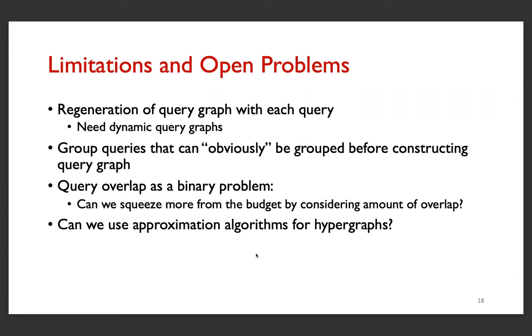Another thing is we have defined query overlap as a binary problem, but we could look into the extent by which queries overlap, and may be able to squeeze more out of the privacy budget using that problem. And some other pointers could be to use approximation algorithms for hypergraphs instead of just looking at the query graph, or any other problem that could relate to maximum overlap for which we know some efficient algorithms in practice.